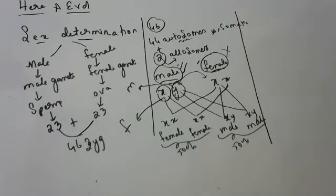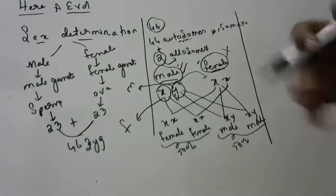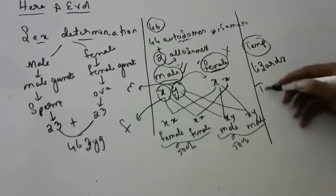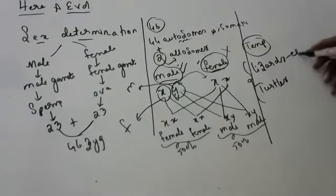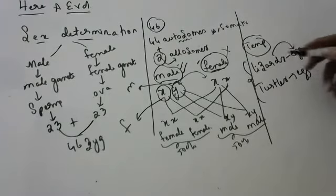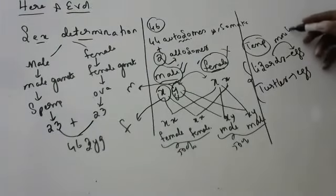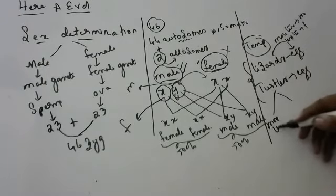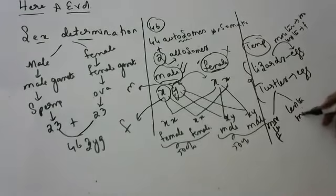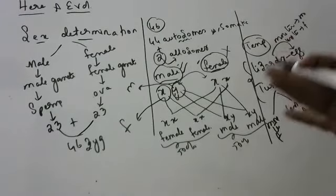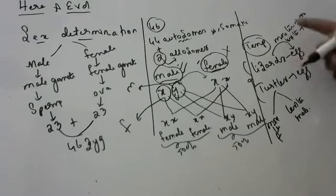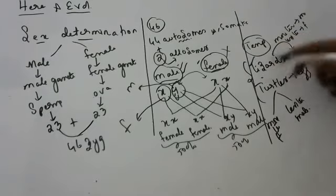In some animals, temperature decides the sex of the baby. In lizards, if the mother gives more temperature to the egg, a male lizard comes; less temperature gives a female. In turtles it is opposite — more temperature gives females, less temperature gives males. Mothers incubate eggs and their warmth affects the sex.